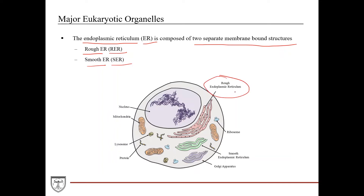The rough endoplasmic reticulum is usually adjacent to and often continuous with the membrane of the nucleus. And then you have the smooth endoplasmic reticulum. The reason it's called rough is because of these black dots — these are ribosomes embedded within the membrane of the rough endoplasmic reticulum. Ribosomes are involved in translation of RNA into amino acids, which eventually become proteins, and the ribosomes located within the membrane of the rough ER are involved in secretory proteins. The rough ER has this rough appearance because of those ribosomes, and you'll see that on electron microscopy.